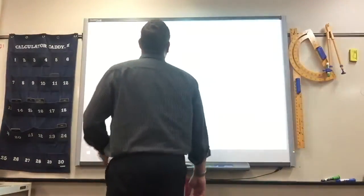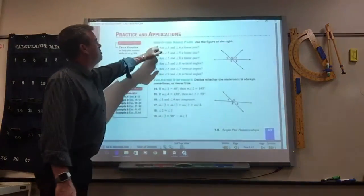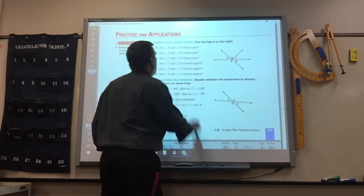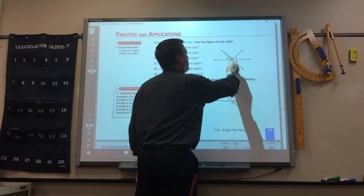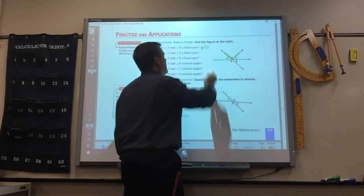Okay, so these are just yes or no. Are 5 and 6 a linear pair? No, they don't form a straight line.